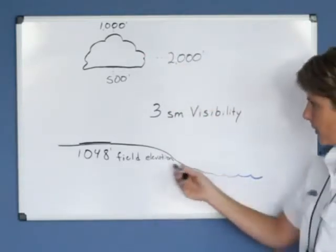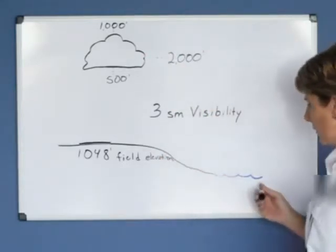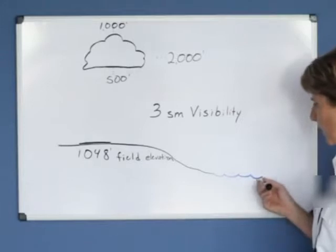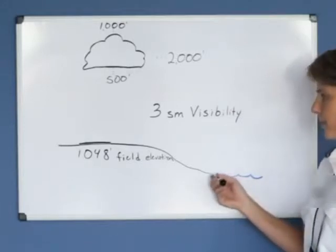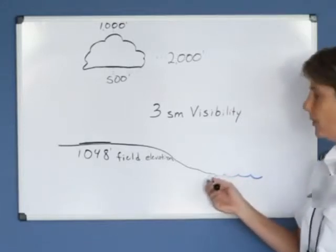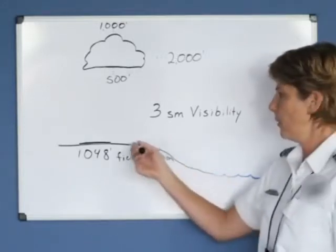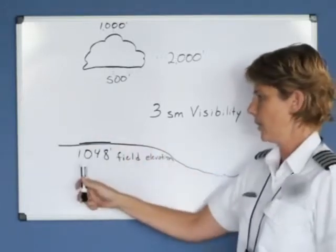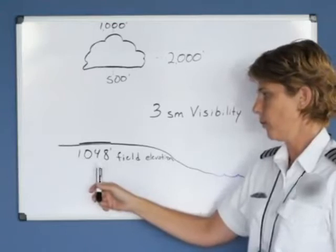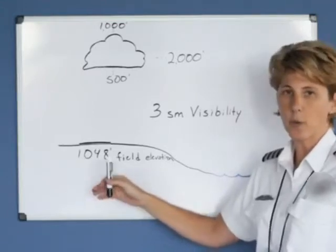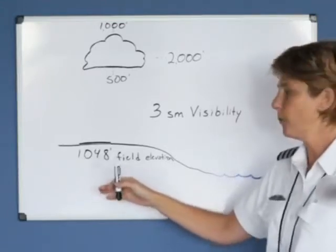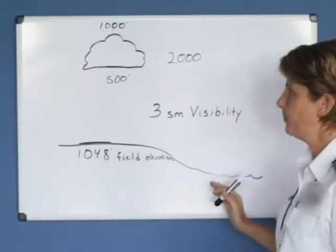In this illustration, this would represent the ocean — sea level — and our field elevation is 1,048 feet. So we're basically 1,000 feet above the ocean.